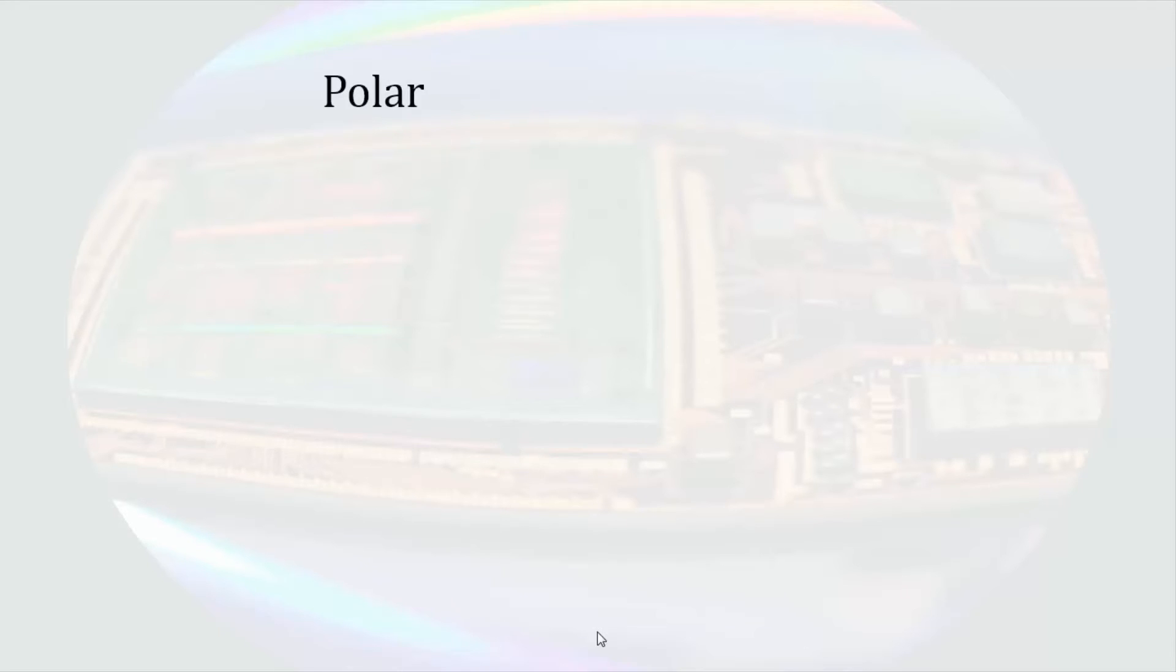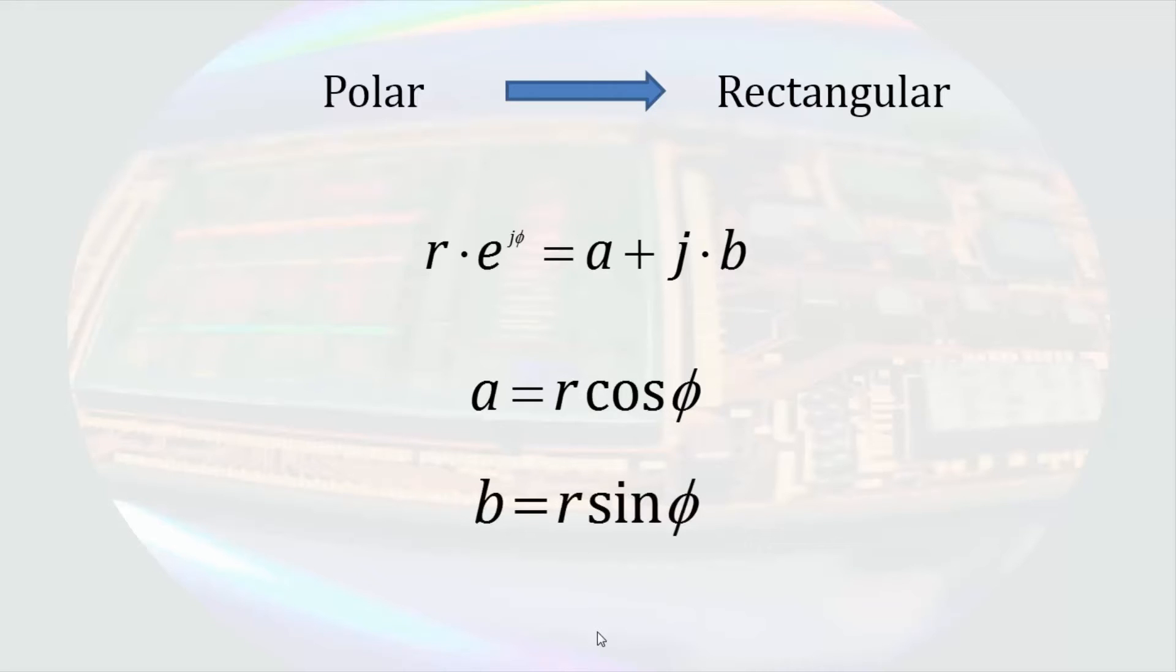So for absolute clarity, if we have a complex number expressed in polar format and we want to convert it to rectangular format, we simply apply Euler's equation. This means the real part will be r times the cosine of the angle and the imaginary part will be r times the sine of the angle.